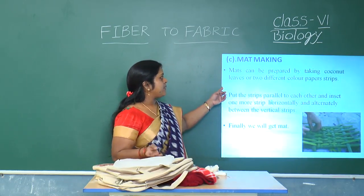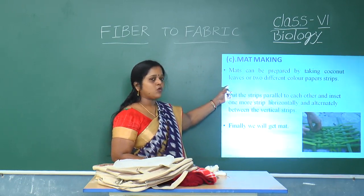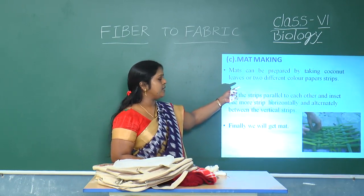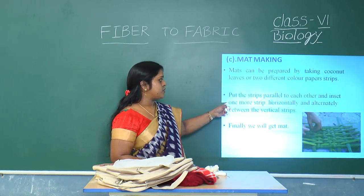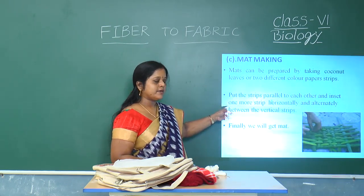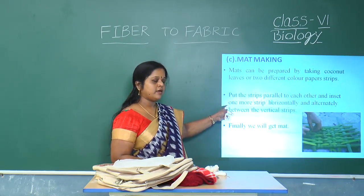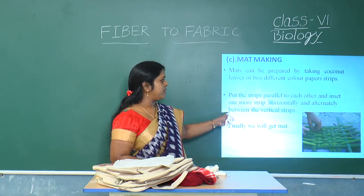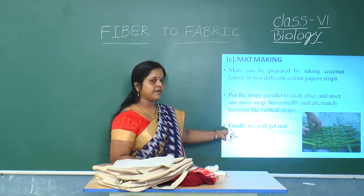Mat making. Mats can be prepared by taking coconut leaves or strips of different colored papers. Put the strips parallel to each other and insert one more strip horizontally and alternately between the vertical strips, so that finally we will get a mat.